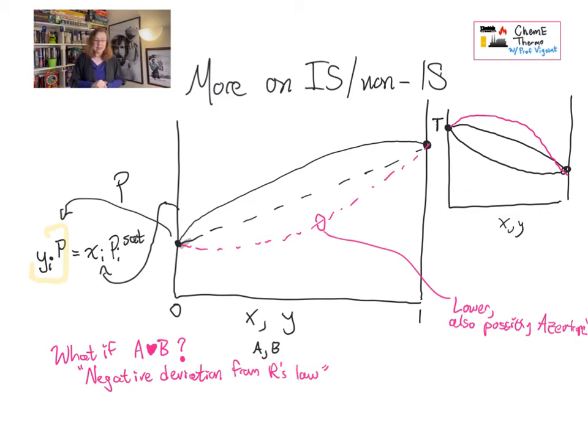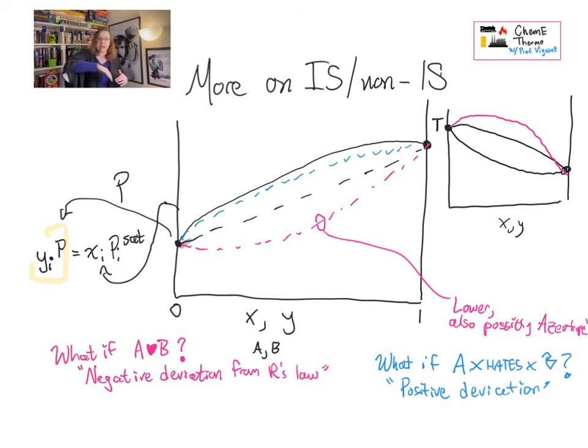So that's what's called a negative deviation. If the molecules love each other a lot, you get a negative deviation. If A and B prefer to be with their own kind than with each other, so A is more highly attracted to A and B is more highly attracted to B than they are to each other, you get what's called a positive deviation from Raoult's law. And as you might guess, that means that the dotted line bows up, goes in the other direction. And on the TXY, you see that it flips down. Okay?